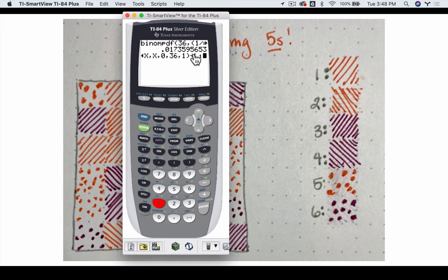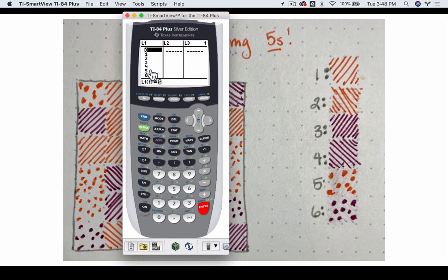So it's going to store that sequence in the first list on a table. Hit enter to store it. And now if I go to stat and edit, here's my first list with that sequence 0 through 36.